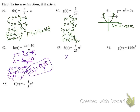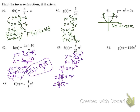Number 53: y = (9/25)x². Switch x and y, multiply both sides by 25/9, then take the square root of both sides — giving plus or minus (5/3) times the square root of x equals y. The plus or minus signals it's a parabola without an inverse, so we write no inverse.